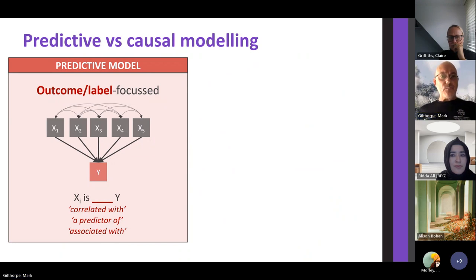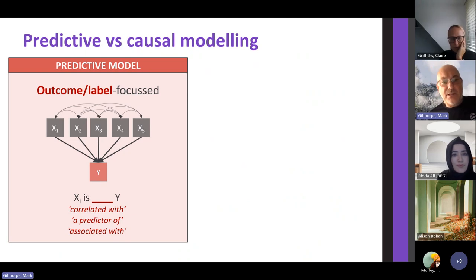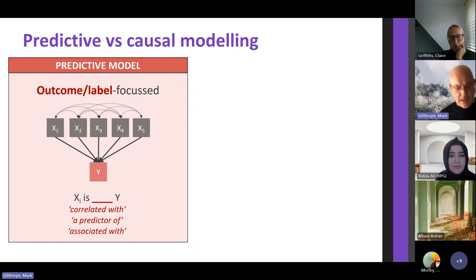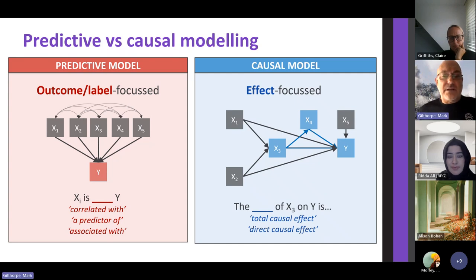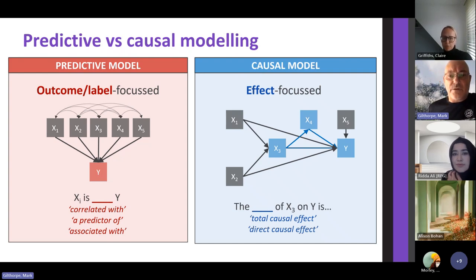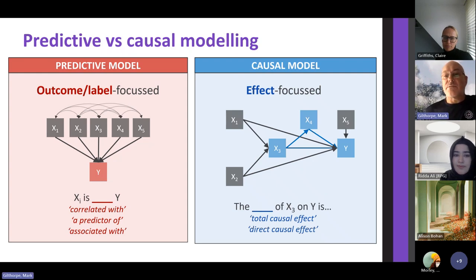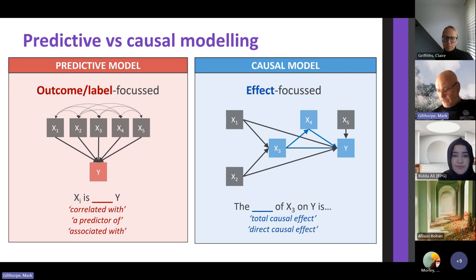If you look at how the prediction model thinks of this, from all those inputs treated equally, any X that is correlated with or associated with Y is what it's trying to find — purely to deliver the predicted Y. Causal modelling, on the other hand, is effect-focused. It takes a step back and asks specifically, for a chosen covariate like X3, what is the total causal effect of X3 on Y? The important point is you're focusing on the pairwise relationship of exposure and outcome, not just the outcome alone.